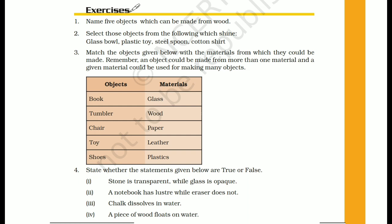Now move on to the second question: select those objects from the following which shine. From the given options — glass bowl, plastic toy, steel spoon, and cotton shirt — the objects which shine are steel spoon and glass bowl.